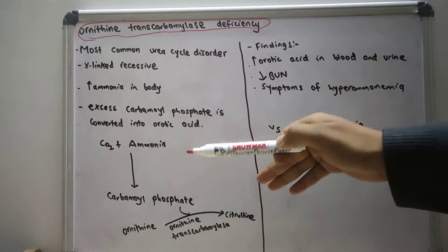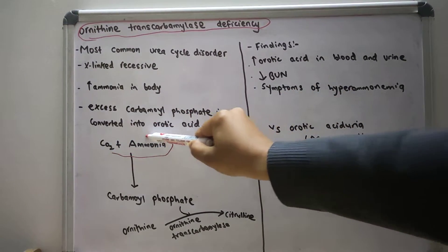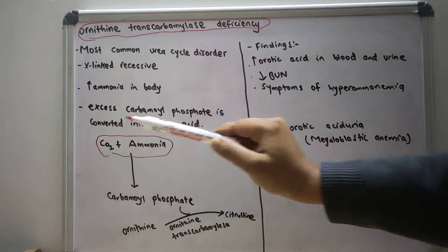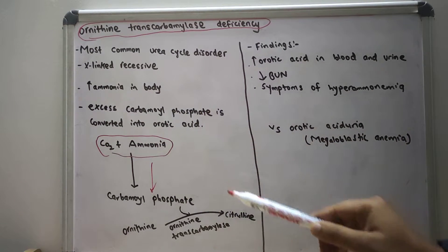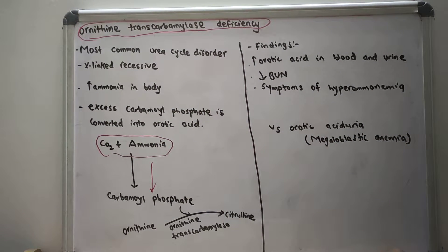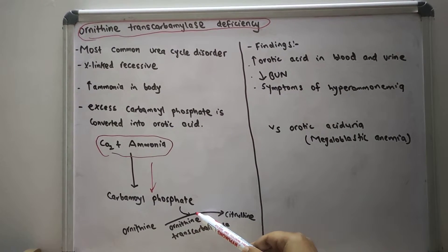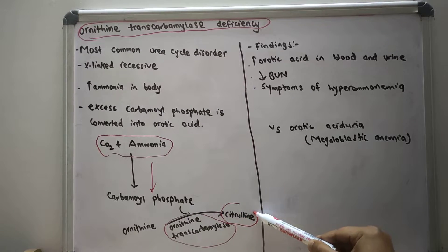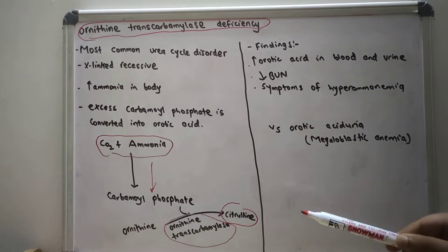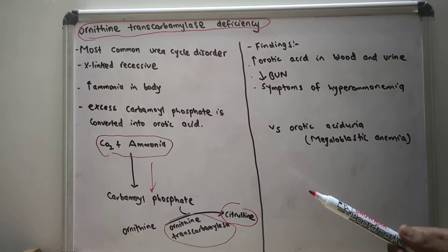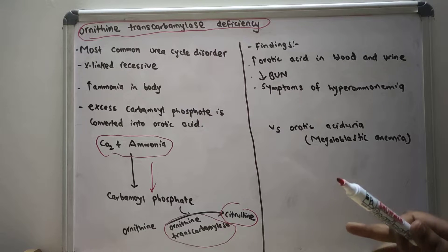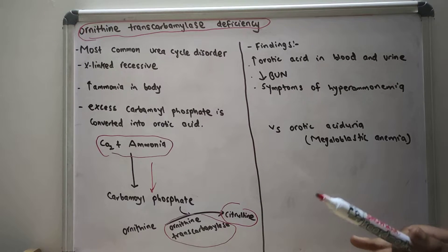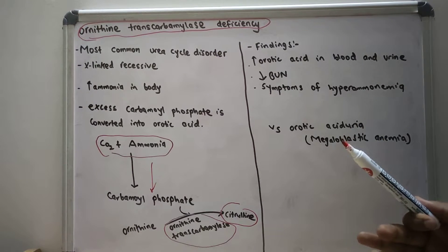In the urea cycle, the combination of carbon dioxide and ammonia gives carbamyl phosphate. Carbamyl phosphate, with the help of ornithine and the enzyme ornithine transcarbamylase, is converted into citrulline.